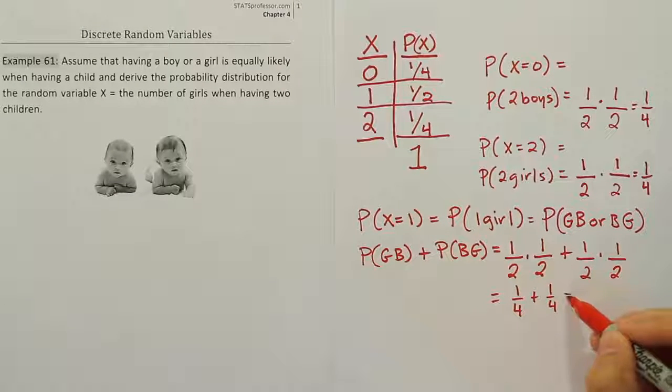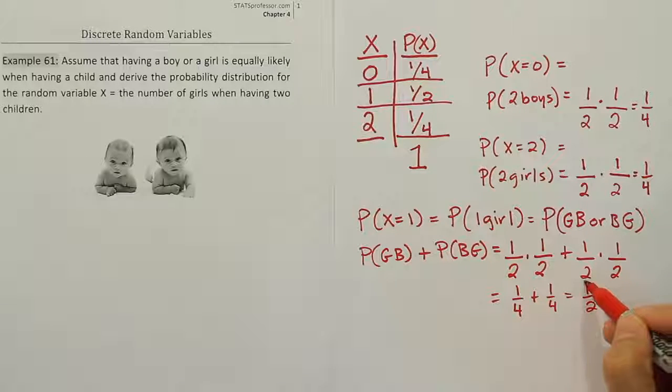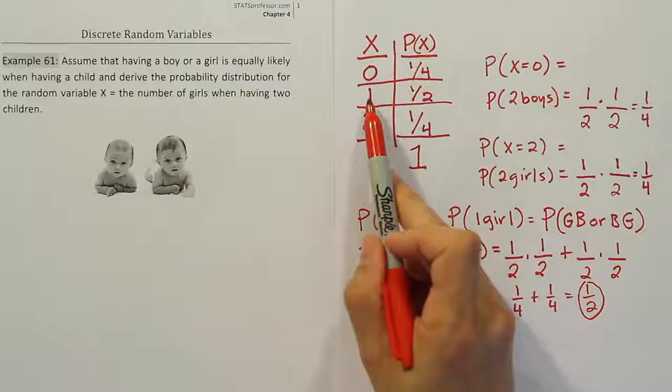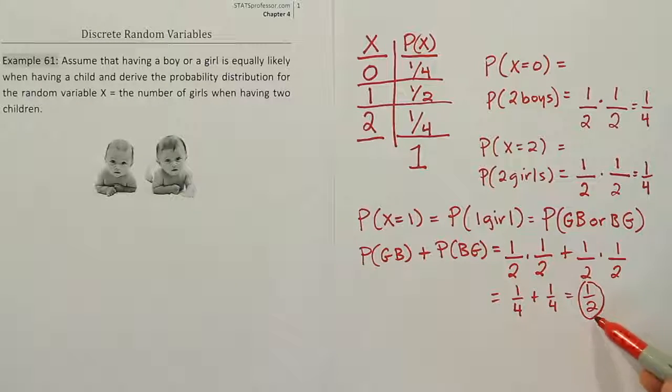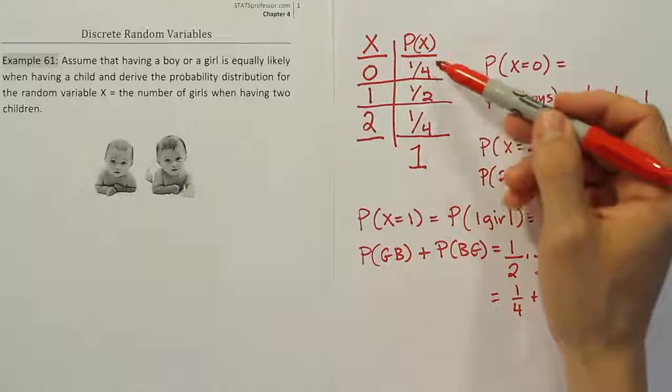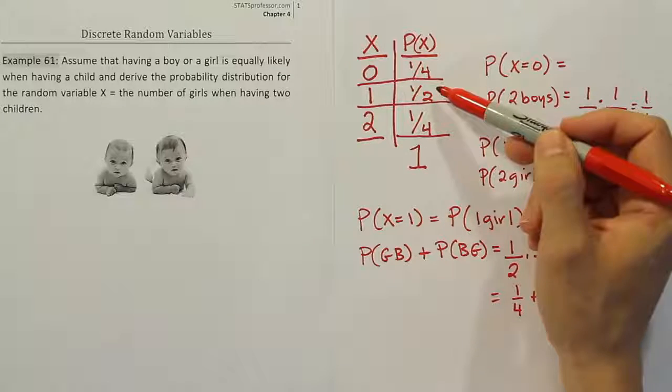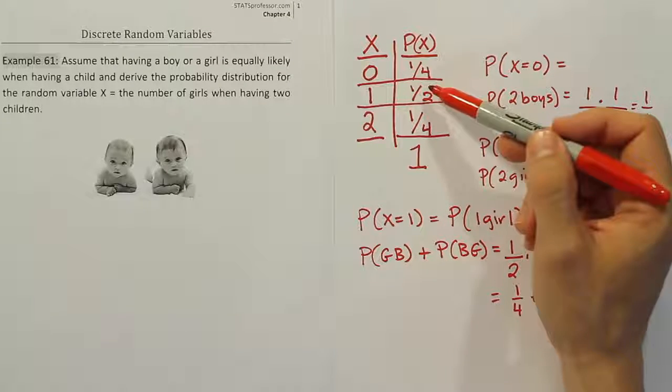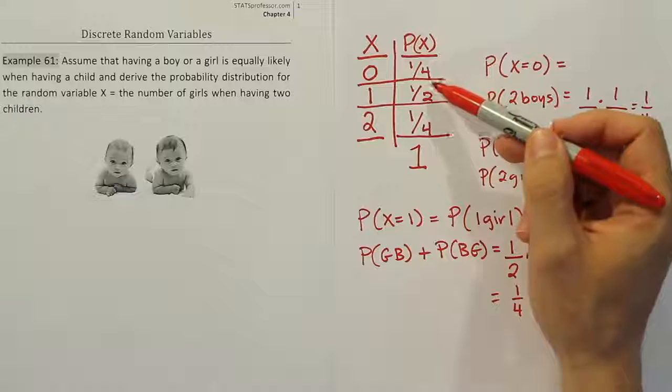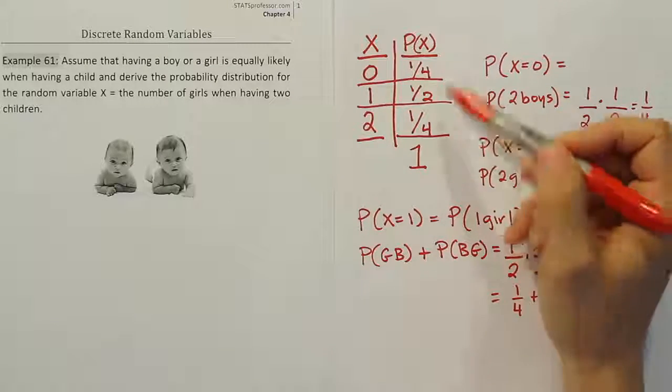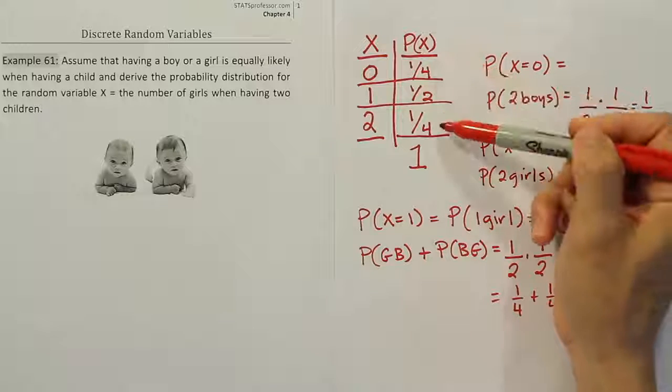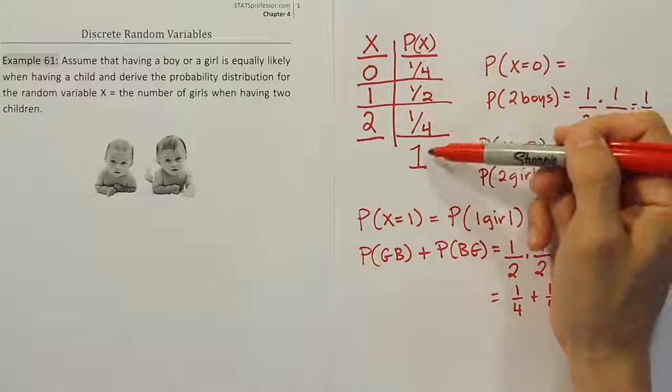That's how we end up with the one-half answer for the case of one girl. But that was ultimately a more difficult way to do it than the way we did it initially, which is just to say, 'Hey, there's only one missing space, so whatever is in that space must make sure that these add up to one.' That's the use of the idea that the probability distribution must have all the probability, so in other words, this column must always add up to one.